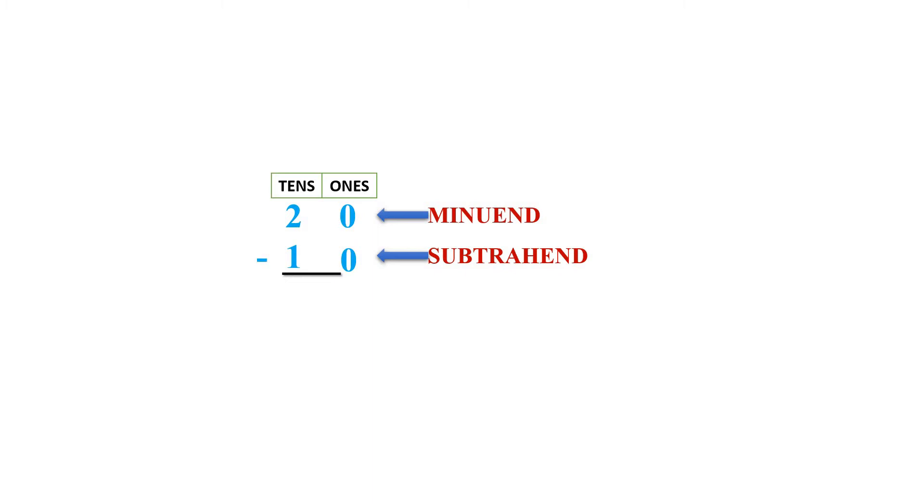Now, subtract. We always subtract from the right side and subtract the subtrahend from minuend. So, 0 minus 0 will be 0. 2 minus 1 will be 1. So in answer we get 10.